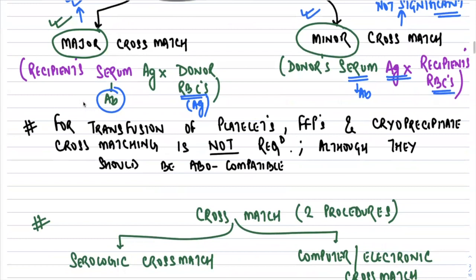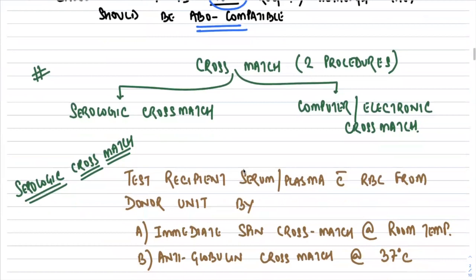For whole blood and packed RBC products, cross-matching is important. However, for transfusion of platelets, fresh frozen plasma, or cryoprecipitates, cross-matching is not required — although it is desirable that they should be ABO compatible. For example, A positive platelets given to A positive, or O negative given to O negative.